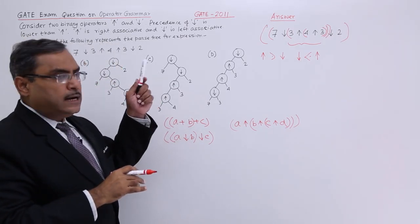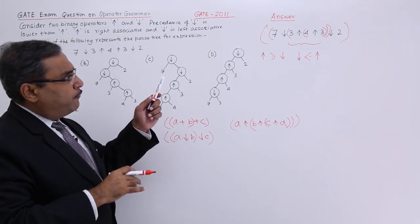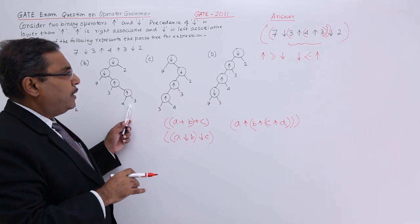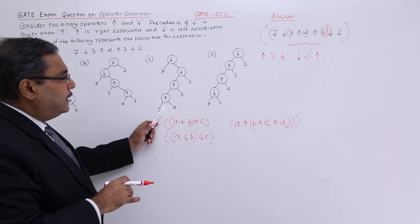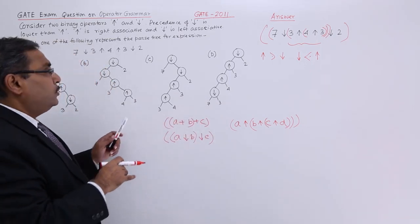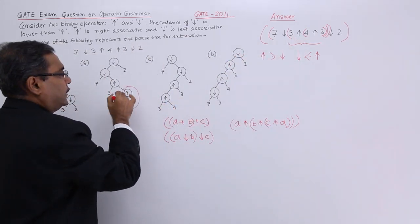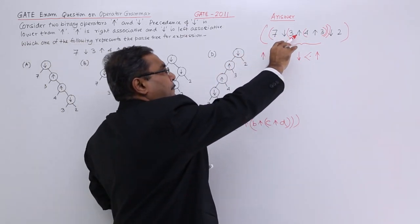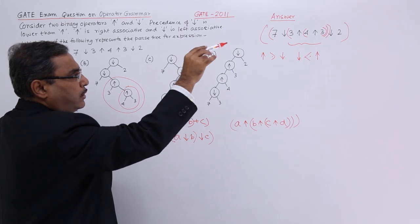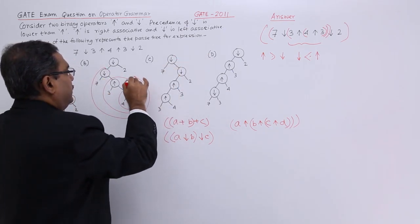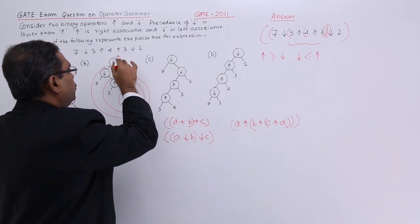Now first I shall go for the innermost sub-expression, and here that is 4 up arrow 3. So 4 up arrow 3 gives me this node — it is this particular sub-tree. Then I shall go for 3 up arrow that component, then seven down arrow that component, and then total result down arrow 2. That means this particular parse tree.